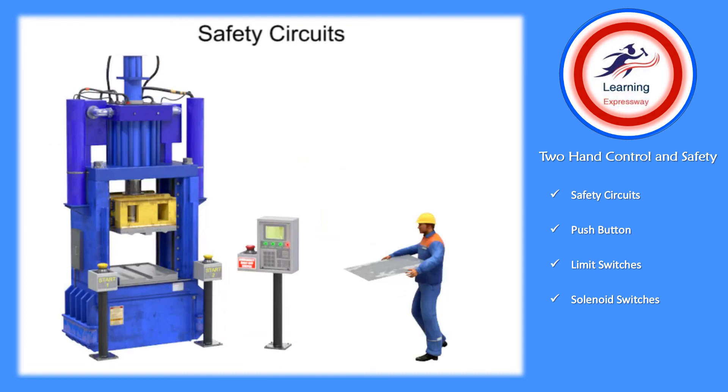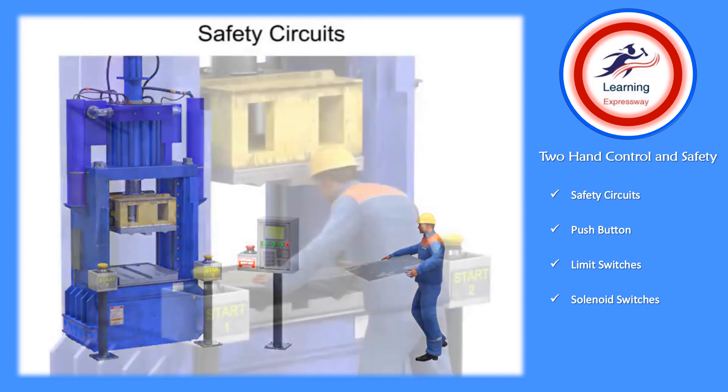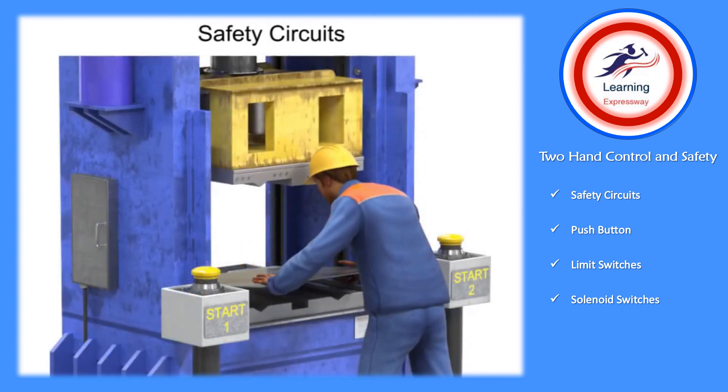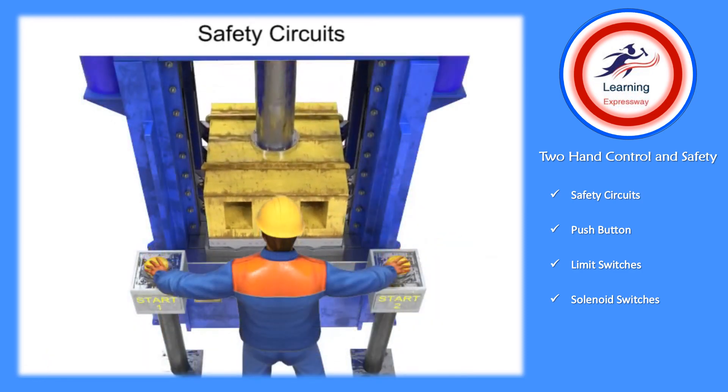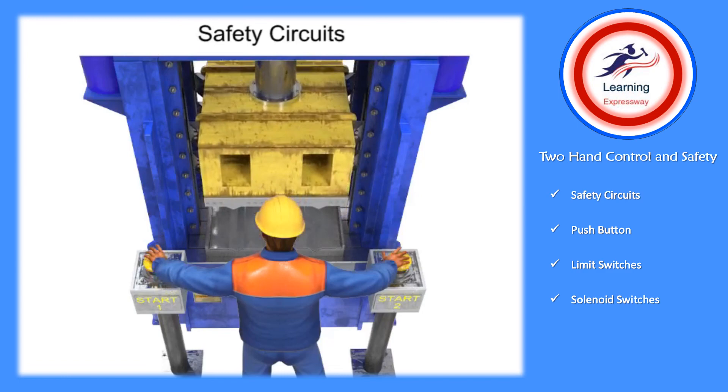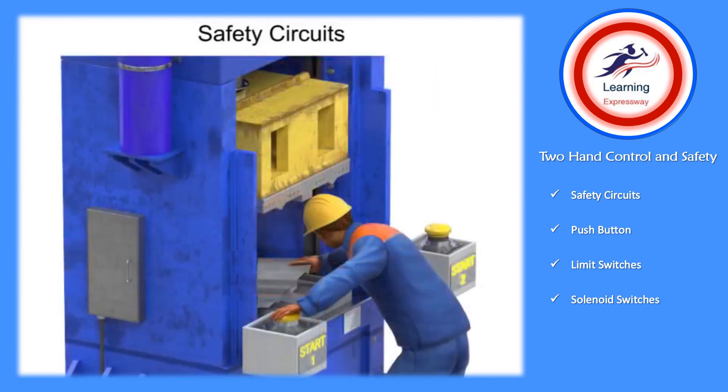In some manufacturing industries, such as those that produce castings from foundries, two-hand controls are mandated on specific equipment. It is the system design team's responsibility to select adequate means of operator protection. Two-hand controlled machinery is an easy and effective way to ensure safe operation of industrial equipment.